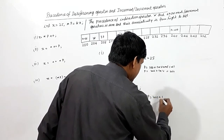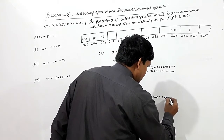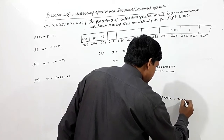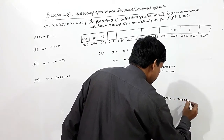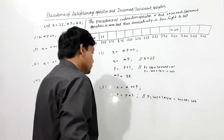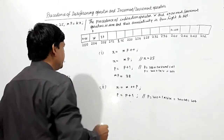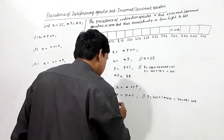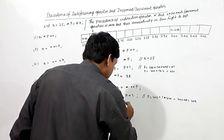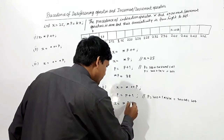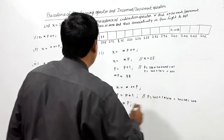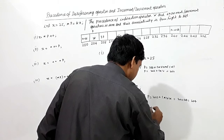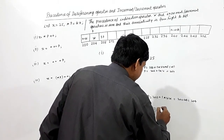So p becomes 200 + 1 × 4 = 204. Now p is pointing at address 204. Using the indirection operator, x will be *p, and what is at 204? That is 38. So the value of x will be 38.